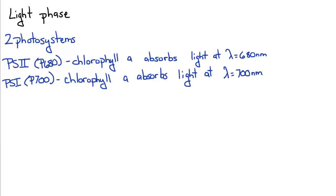Photosystem I, or P700, the chlorophyll A molecule absorbs light at a wavelength of 700 nanometers.